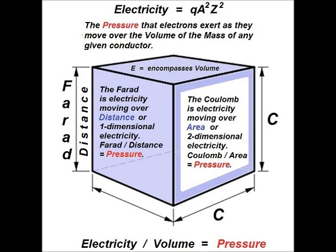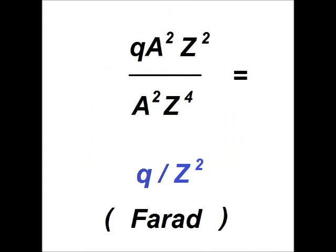The electricity in total flowing over the cube is qa squared z squared. However, only on the one side, it exists in the form of charge, or the coulomb. And we can see on the left-hand side of the image that if we look at only one segment of the cube — the form of distance — the electricity flowing in that one dimension is flowing in the form of the farad, which is q over z squared. So qa squared z squared divided by two dimensions, which is area, or a squared z to the fourth, gives us electricity moving in one dimension — the farad, q over z squared.